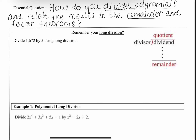If you were asked to divide 1,672 by 5, you might have made yourself a long division symbol. 5 is your divisor — that's the number you're dividing by — and it goes on the outside of the division symbol. Your dividend, the number being divided by 5, goes on the inside.